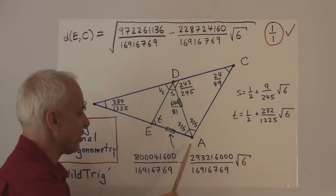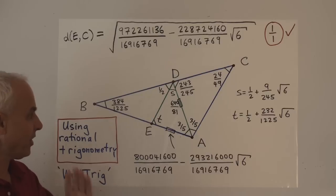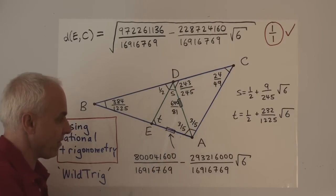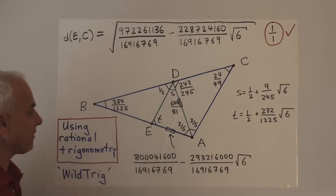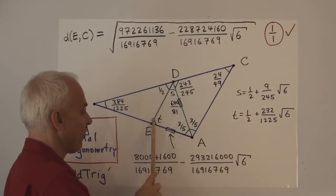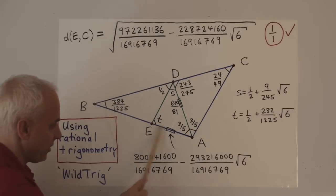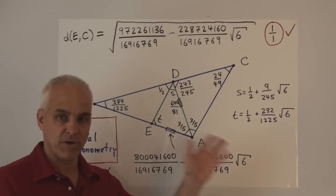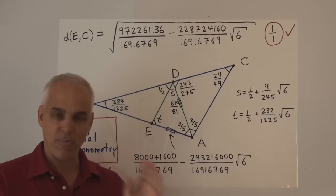Here is some additional information about that picture, expressed in the framework of rational trigonometry — no angles, no distances, just spreads and quadrants. It turns out these two spreads are three-fifths each; another spread is 24 over 49; another is 384 over 1225. The 45-degree angle becomes a spread of one-half. The quadrant, which is the square of the distance, is 640 over 81. All of these numbers are exactly precise — there are no approximations whatsoever.